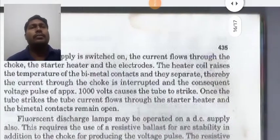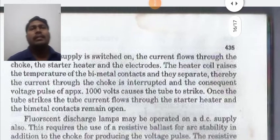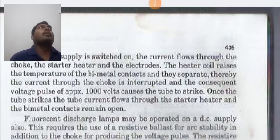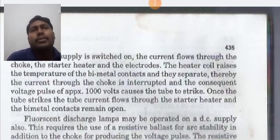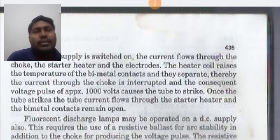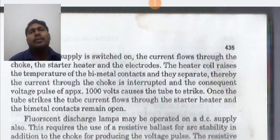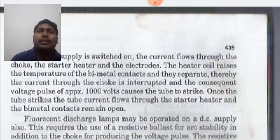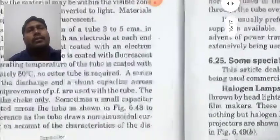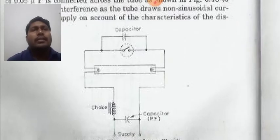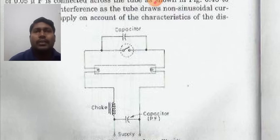When the supply is switched on, the current flows through the choke, the starter heater, and the electrodes. The heater coil raises the temperature of the bi-metal contacts and they separate, thereby interrupting the current through the choke. A voltage pulse of approximately 1000 volts causes the tube to strike. Once the tube strikes, the tube current flows through the starter heater and the bi-metal contact remains open. The circuit diagram includes a choke, a starter, and a capacitor connected for correcting the power factor.